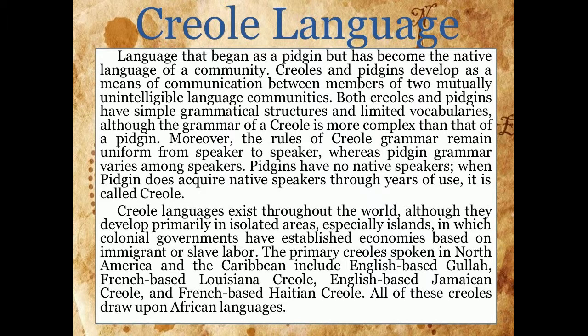A creole language begins as a pidgin but has become the native language of a community. Creoles and pidgins develop as means of communication between members of two mutually unintelligible language communities, with simple grammatical structures and limited vocabularies, although the grammar of a creole is more complex than that of a pidgin. Pidgins have no native speakers; when a pidgin acquires native speakers through years of use, it is called a creole.